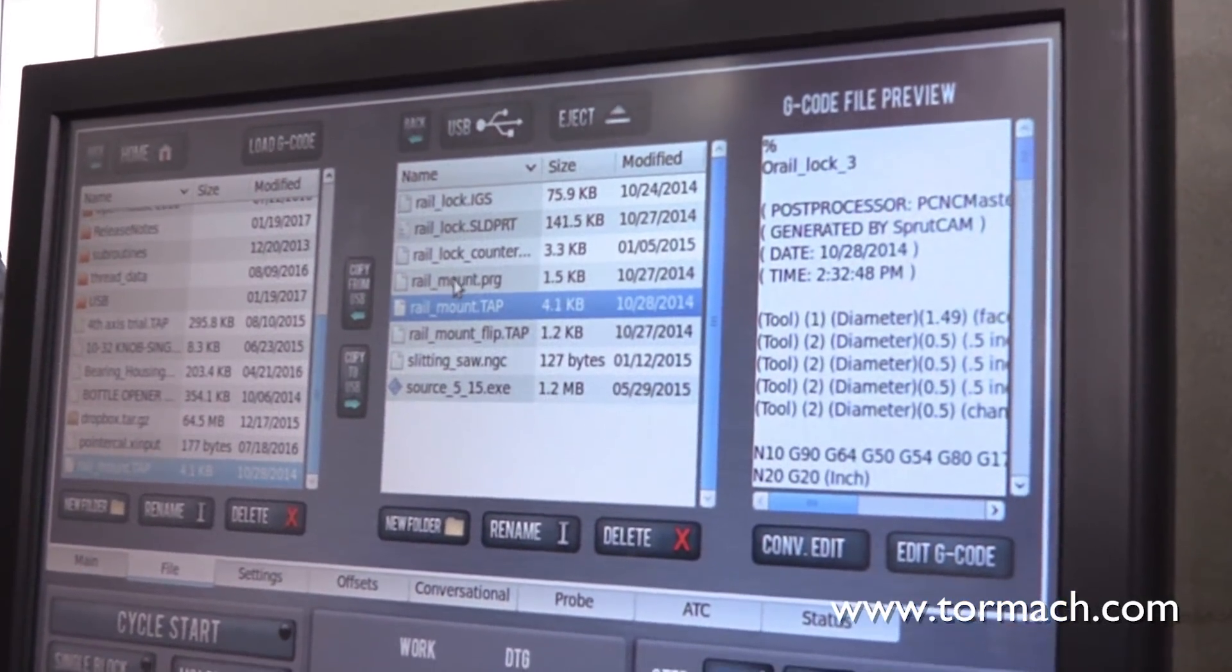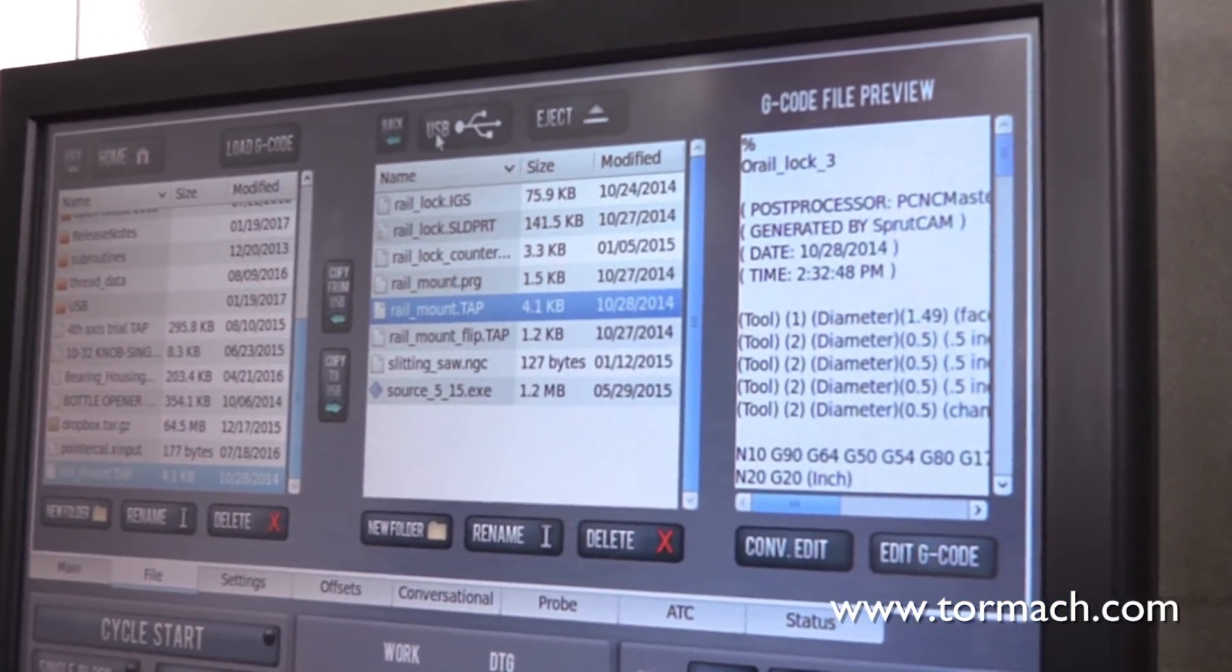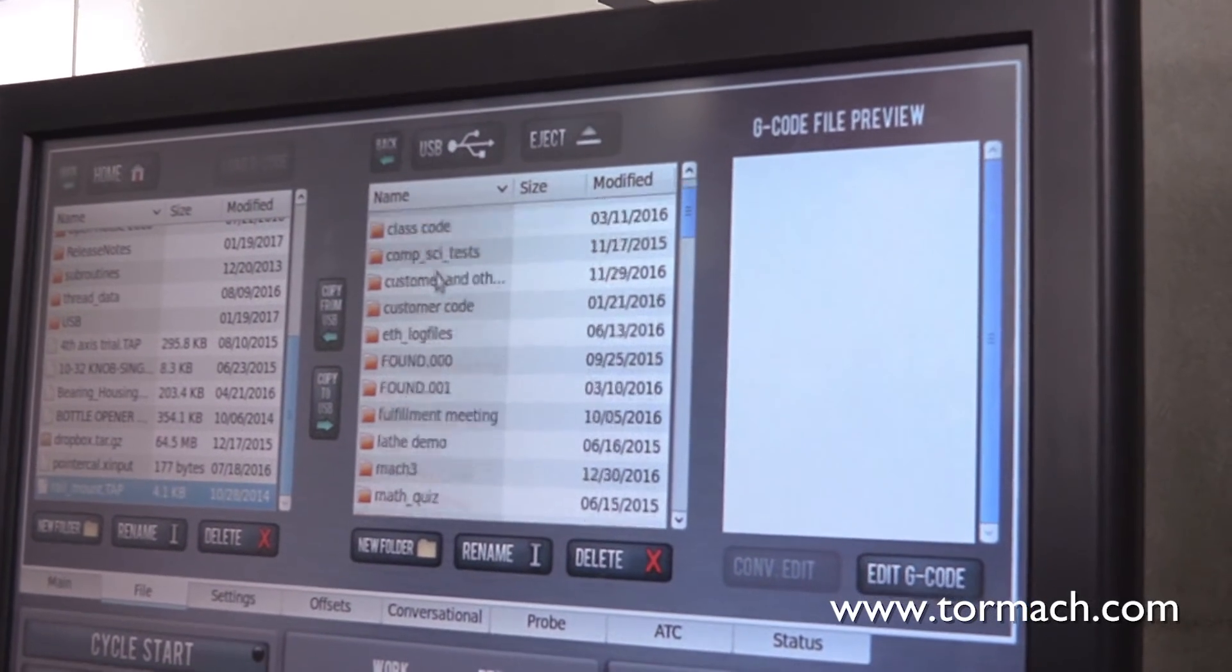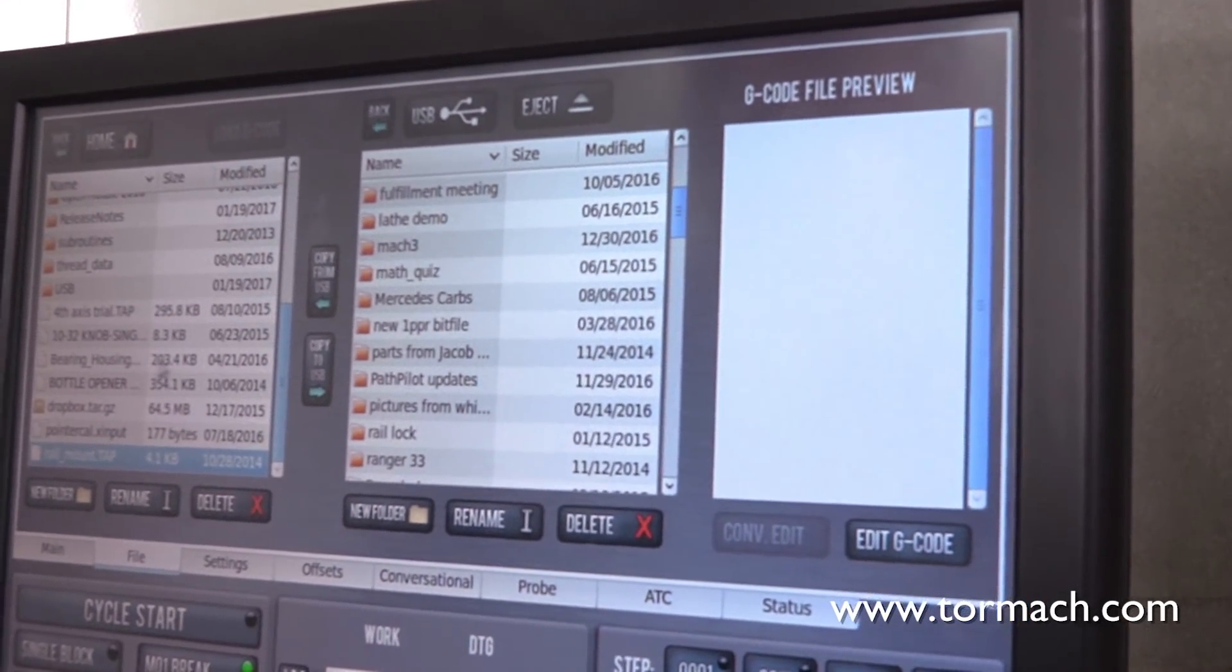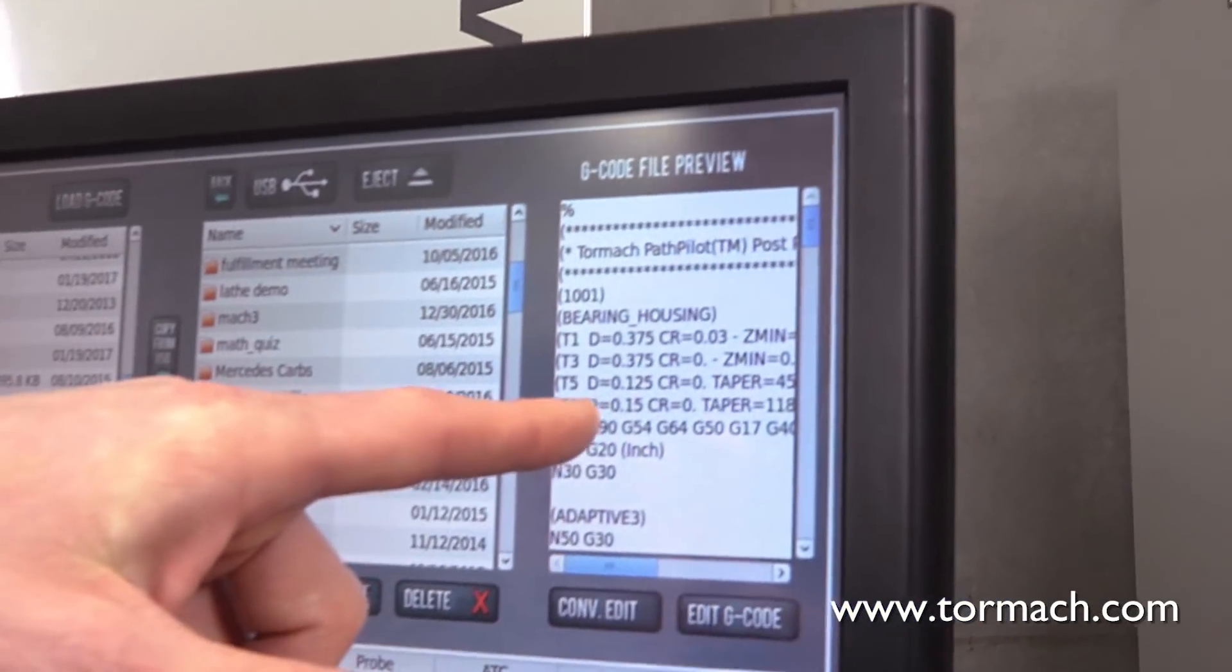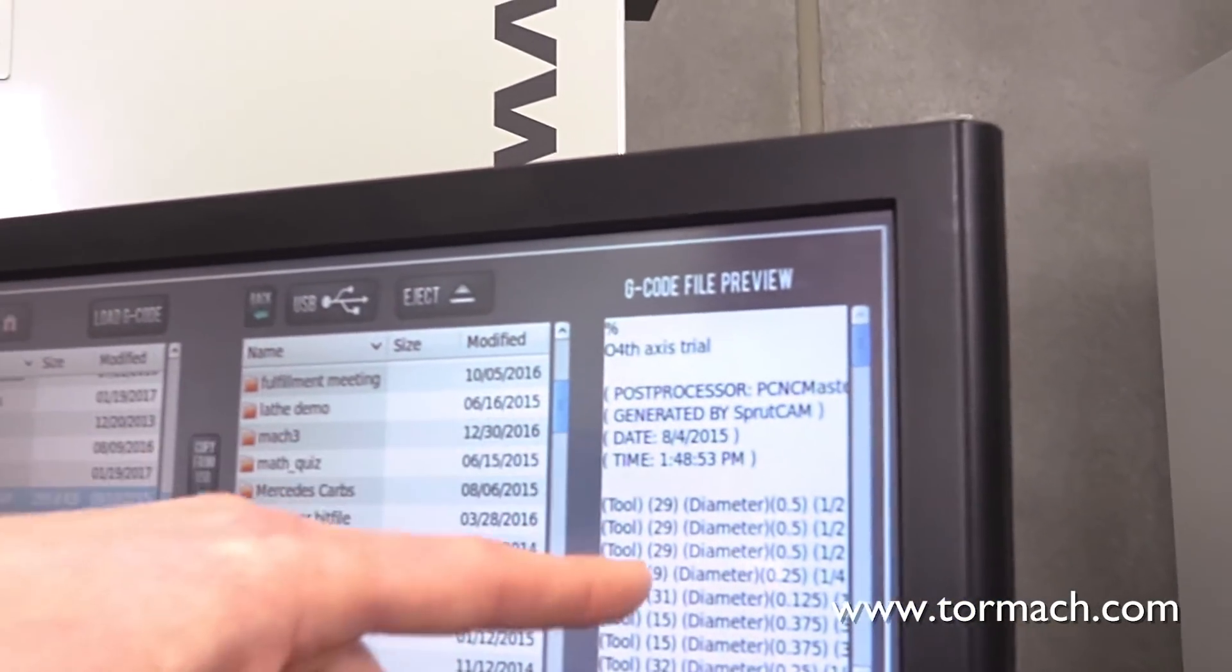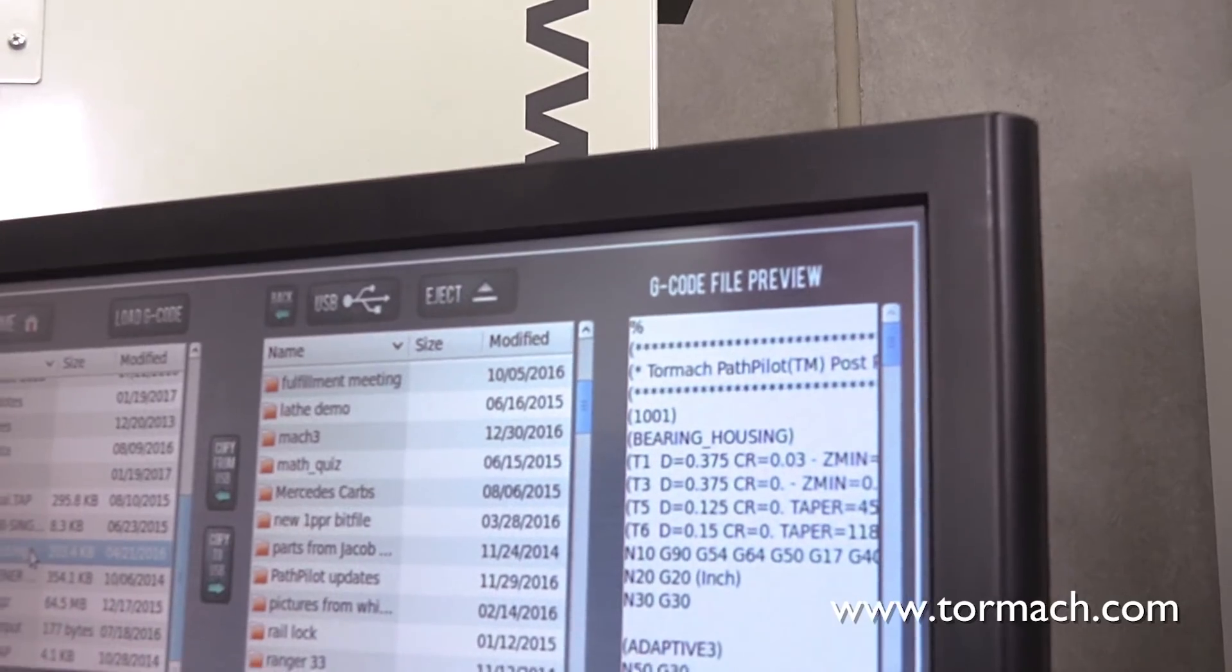There is a little preview here. So we could take a look at different G-codes here. And as I click on them, you'll be able to read the first few lines of the G-code file.